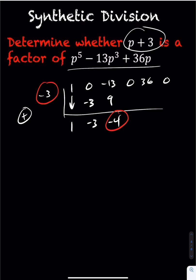We then take negative 4 times negative 3 which is 12. Adding we get 12. We then take 12 times negative 3 which is negative 36. Adding we get 0.